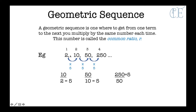To work out the common ratio, if you can't see it quickly, you can do a division: this number divided by this one, or this number divided by this one, or this number divided by this one, and they'll all give you the common ratio of 5.